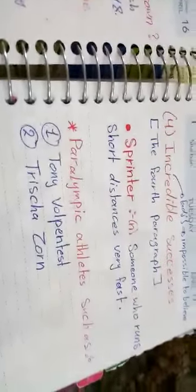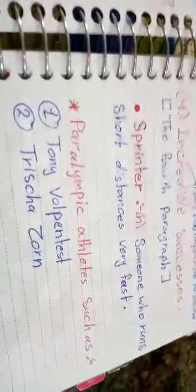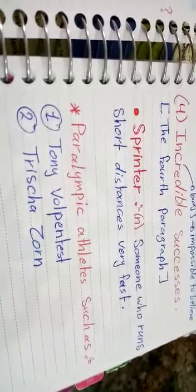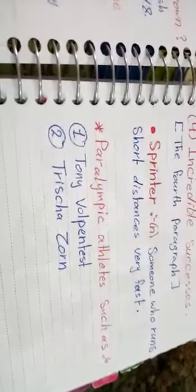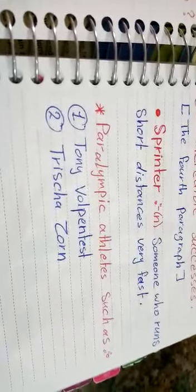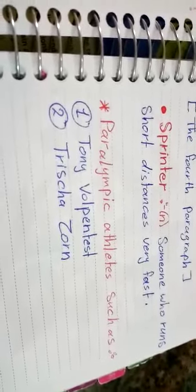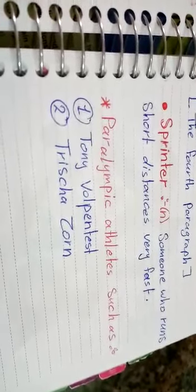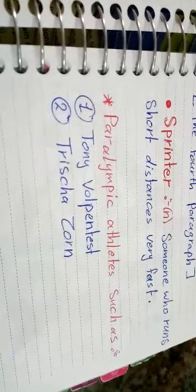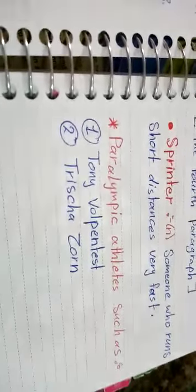Now, sprinter, what does it mean? Someone who runs short distances very fast. And this paragraph talks about the Paralympic athletes such as. So, give examples about Paralympic athletes. Tony Volopin Test, Trisha Zorn.